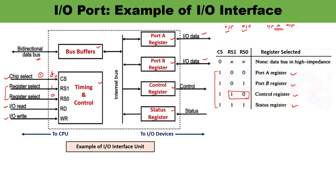Depending upon the control signal, whether a read operation or a write operation is being performed, the appropriate action is taken. This is how you can explain the connections between the interface unit and which register is to be selected and how the data is going to be transferred. You must remember that a command is always passed to the input-output device by sending a word to the appropriate interface register. Thank you so much for watching this video.